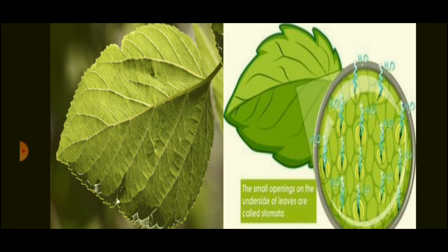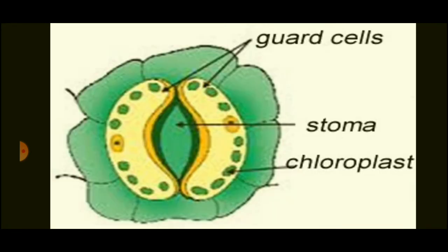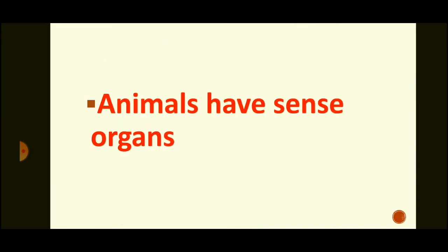But in plants, the exchange of gases happens through stomata on the underside of the leaves. Plants breathe through the tiny pores on the underside of their leaves known as stomata. You can see that the plant's leaf has small pores on its underside called stomata.